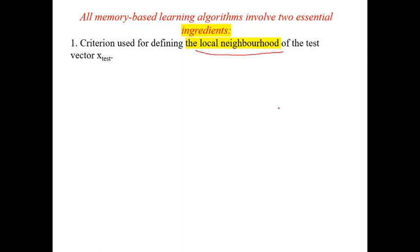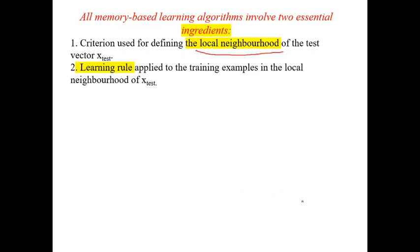A memory-based learning algorithm involves two essential ingredients. This is important. The first condition is, first you need to define what criteria we are using to define local neighborhood. On what basis you are saying it is local or non-local. How much distance you are maintaining between these two elements to say they are in the neighborhood. That is called as condition for defining the local neighborhood test of vector X test.